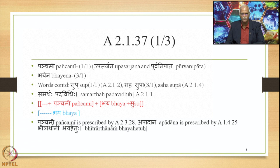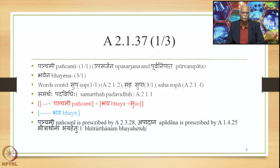Then we have the word Bhayena, which is instrumental singular (3/1) with the word Bhaya. The words continued are Sup from 2.1.2, 'Subha Mantrite Parangavatsware,' and Sahasupa from Sutra 2.1.4. Samarthapada Vidhihi from 2.1.1 is obviously present. The structure of this compound is: the Purvapada having the Panchami Vibhakti at the end, and the Uttharapada having the Pratipadika Bhaya and the Pratyaya Su. The output generated is the Pratipadika in the Purvapada and the Pratipadika Bhaya in the Uttharapada.